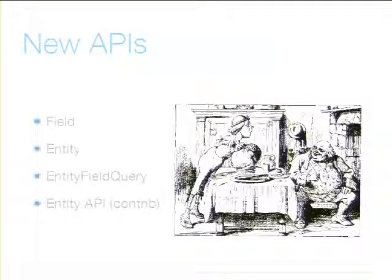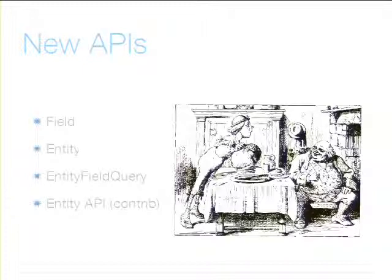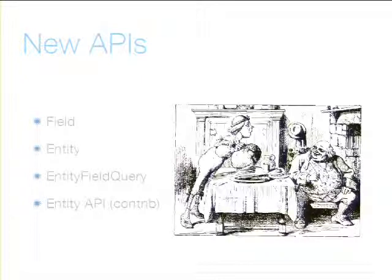Late in the cycle, something else emerged: the Entity Field Query. Now that we've got data in all these new different places, it became confusing to figure out how to retrieve it. The Entity Field Query is a new API in Core that you can use to retrieve the value of a specific field — it's smart about what language to retrieve, what value, where the field is stored. A lot of what we needed for entities didn't quite make it into Core, so there's a contrib module called Entity API that is being used by an awful lot of contrib modules doing anything with entities.